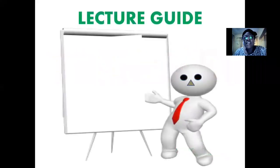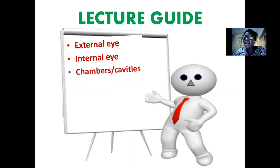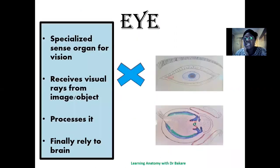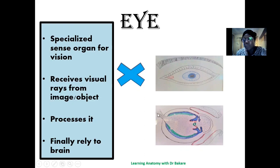Let's look at the eye. By the end of this class, we should be able to describe the structures of the external eye, the structures embedded within the internal eye, the chambers and cavities of the eye, the fluid compartments, the lacrimal gland, blood supply, and some clinical anatomy. The eye is a specialized sense organ used for vision. It receives visual rays from objects in the external environment, passing through it and undergoing processing before the optic nerve picks it up and directs it to the brain where interpretation occurs.